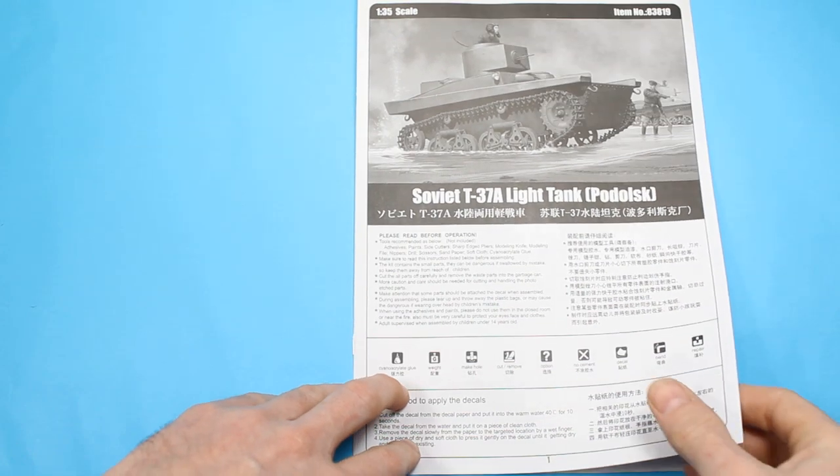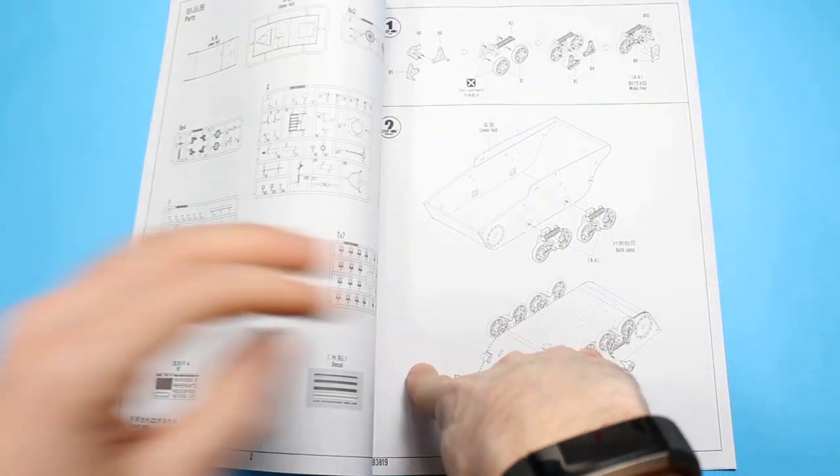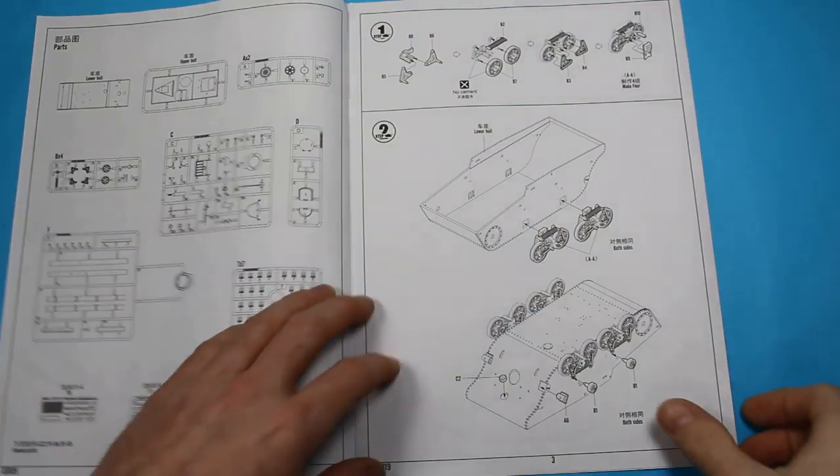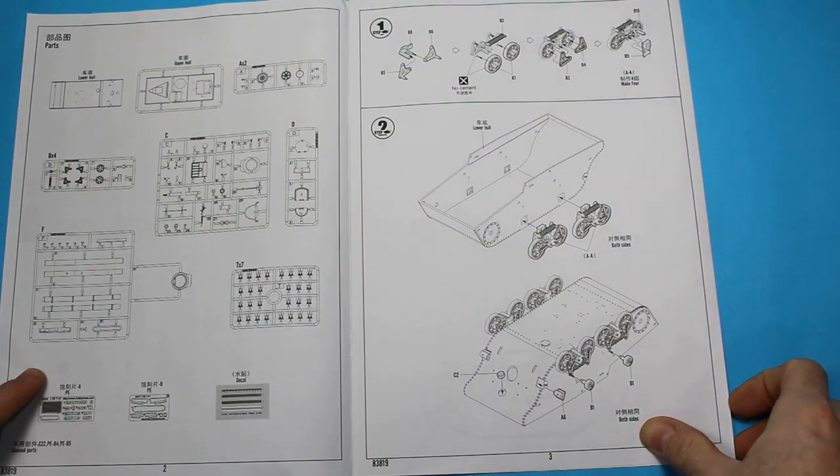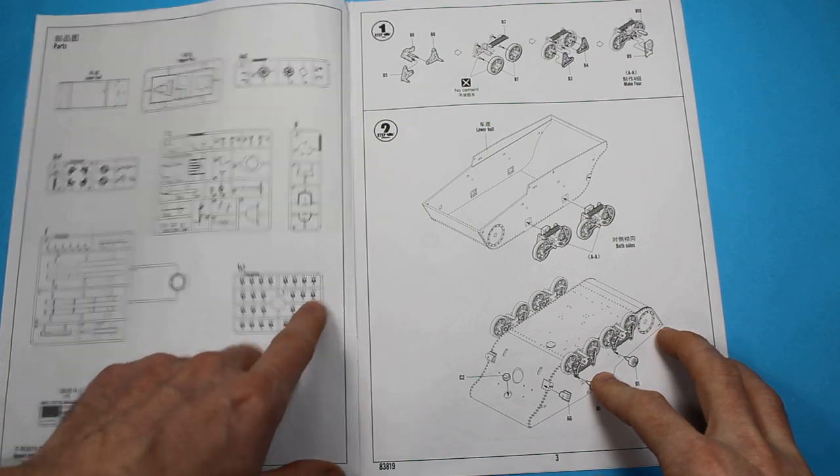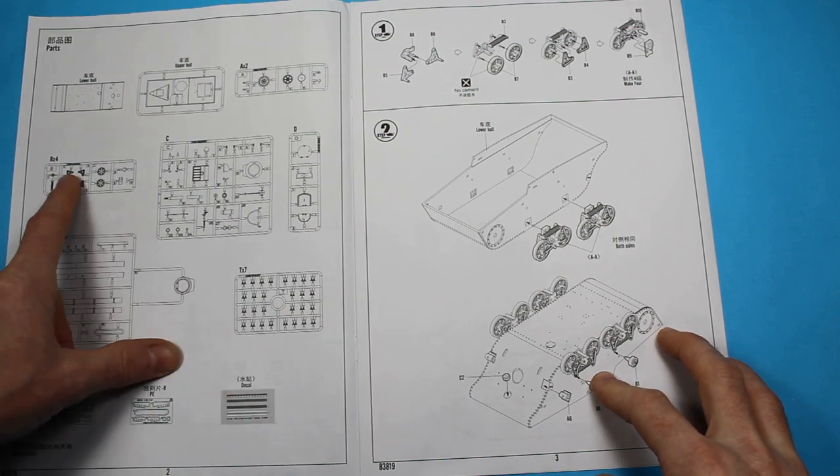We'll take a minute to go through the instructions. It's a pretty simple kit, and here's the parts breakdown. You can see it's not a huge amount of sprues, mainly being found in the wheels and the tracks.